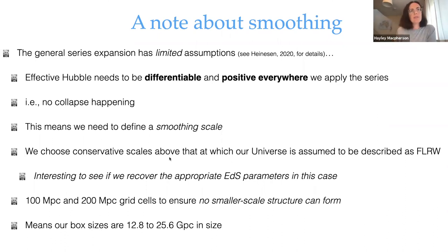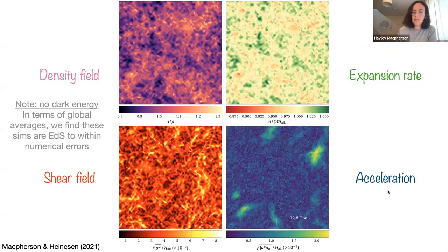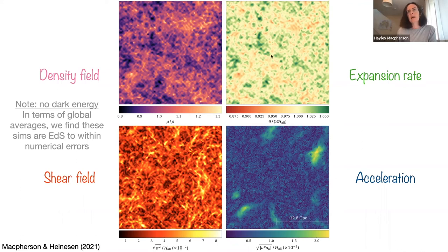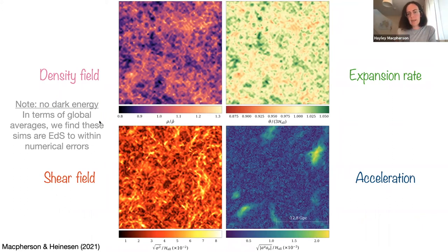Here is a snapshot at redshift zero of one of the simulations. These are two-dimensional slices through a three-dimensional domain. The top left shows the density field, top right the expansion rate, bottom panels the shear field and the acceleration — the contributing factors to the effective Hubble parameter in Esther's generalized series expansion. We have no dark energy in these simulations, which generally means larger density contrast than in a Lambda-CDM simulation. When averaging on large scales, the cosmological parameters agree with the Einstein-de Sitter model to within numerical errors.